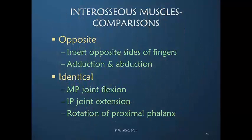These are singularly the most important points to remember. Even though the dorsal and volar interosseous muscles are considered to be opposite in their ability to ab and adduct, they do identical functions. They insert on opposite sides of the fingers — one on the radial and one on the ulnar side. They never insert on the same side, and they are opposite in their motions.